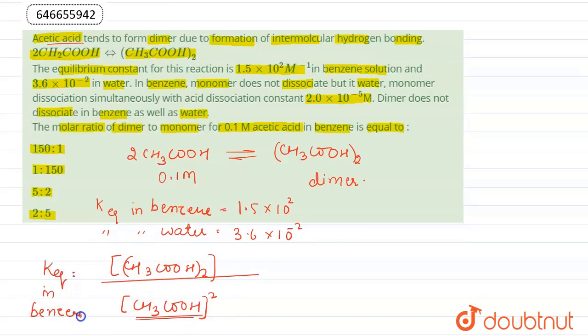So this expression can be written as 150 is equal to the concentration of dimer. The concentration of dimer can be written as 0.1 divided by 2, because they are present in 2:1 ratio. It means the concentration remains half in case of dimer. So we can write 150 is equal to 0.1 divided by 2 divided by the concentration of CH3COOH whole power 2.